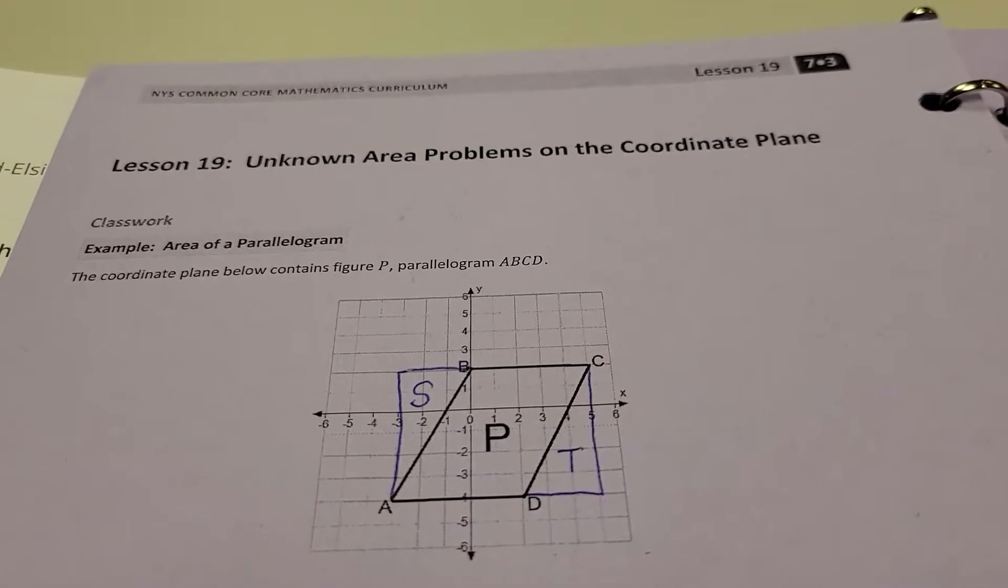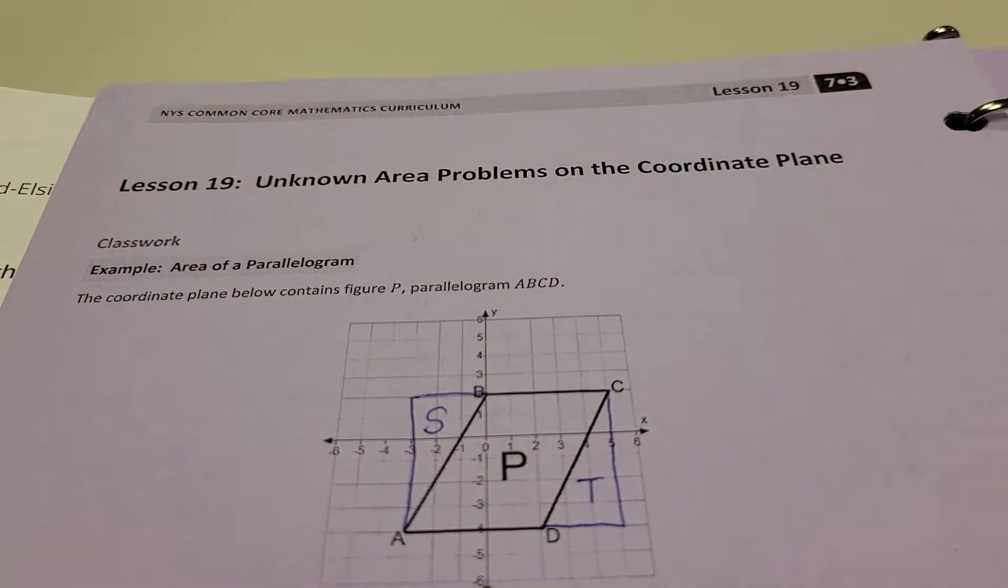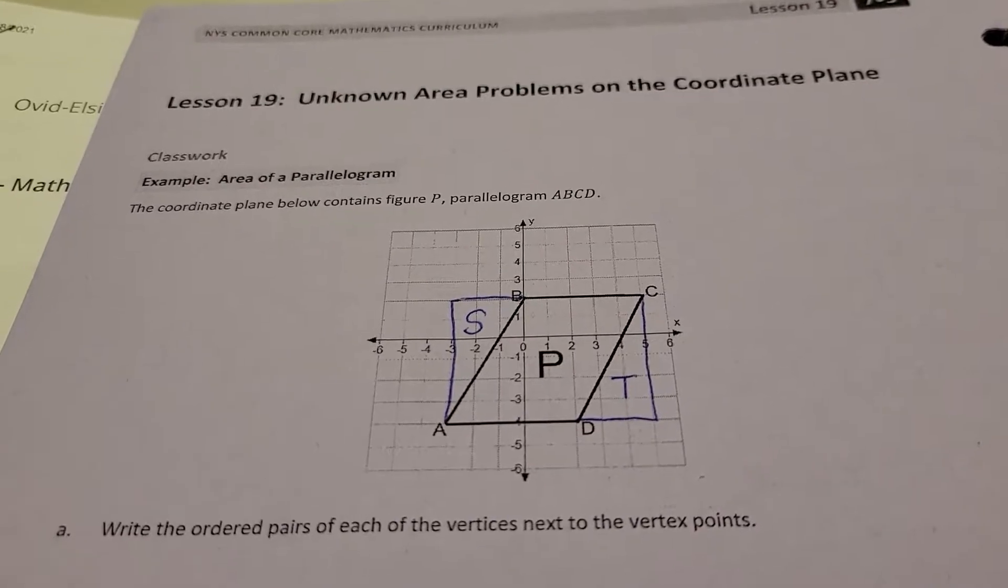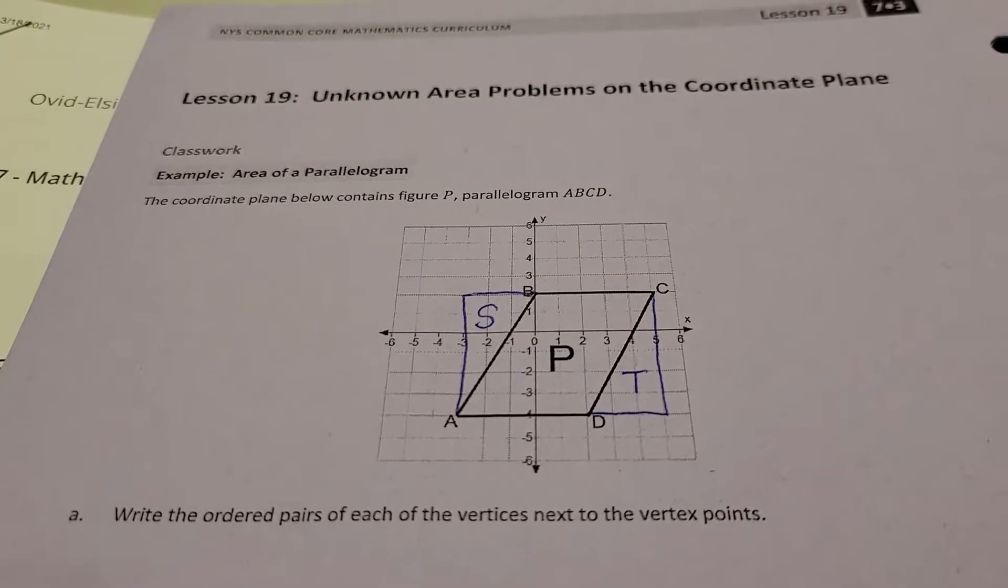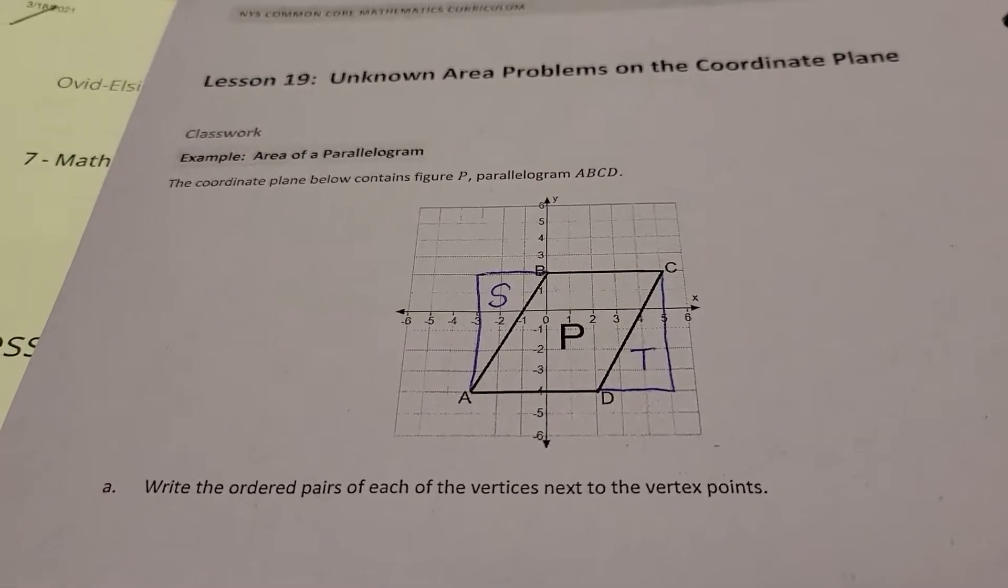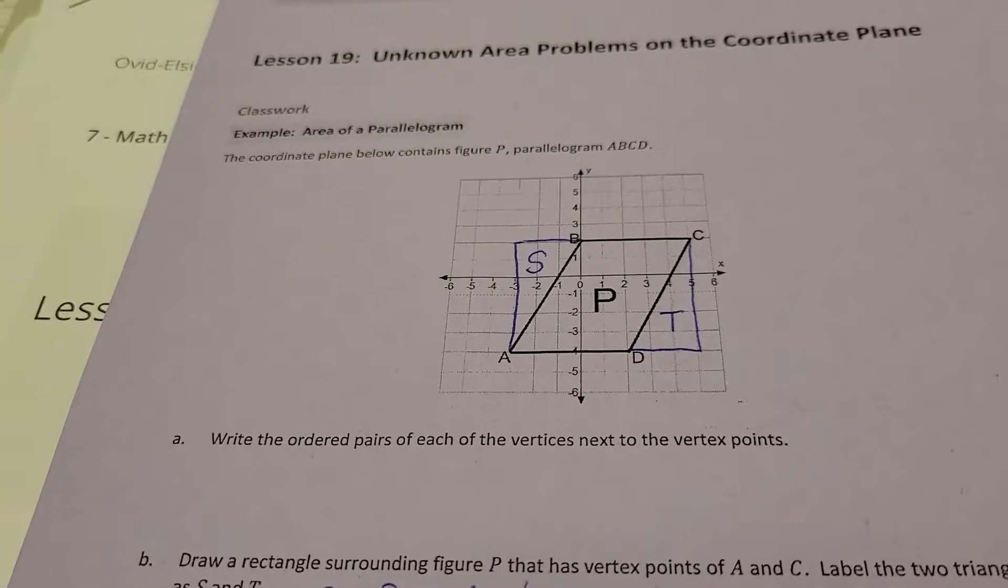Alright, what we're going to do is we're going to combine lessons 19 and 20 today. We're going to do a few examples out of each, and then we'll have a practice afterwards with this. It's really just working with some more area of figures and some different approaches you want to take to sometimes irregular objects or stuff you see on a coordinate plane.